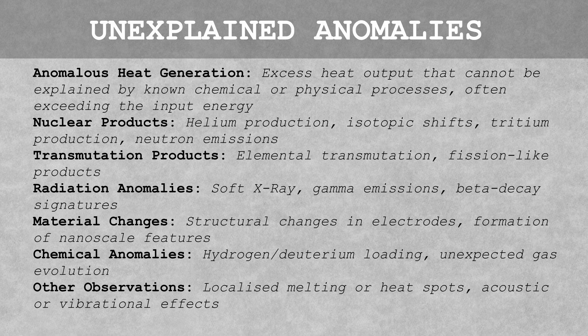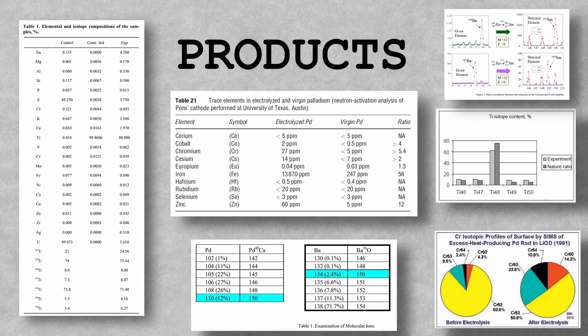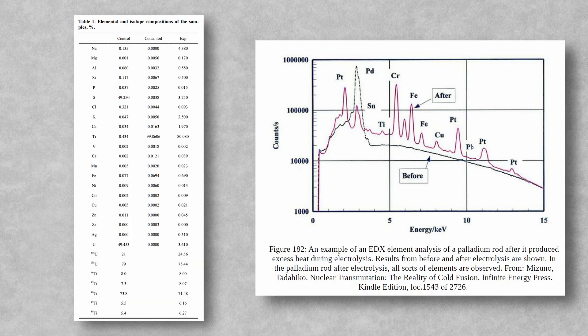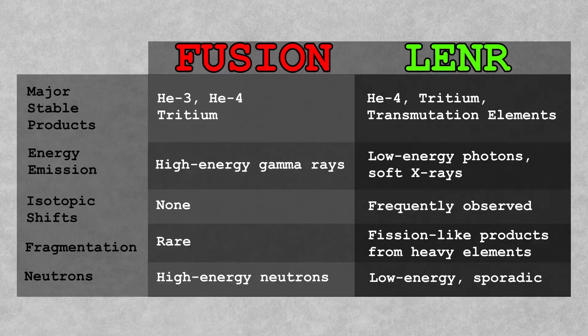One of the significant challenges in understanding LENR is the wide variety of nuclear products that are observed, many of which do not fit the expected pattern of traditional fusion. In fusion experiments, one would expect to see the production of primarily helium and possibly neutrons. However, in numerous LENR experiments, heavier elements such as copper, titanium, iron, and even barium and strontium—elements typically associated with fission products—are detected. These results challenge the conventional assumption that fusion is the only process occurring.